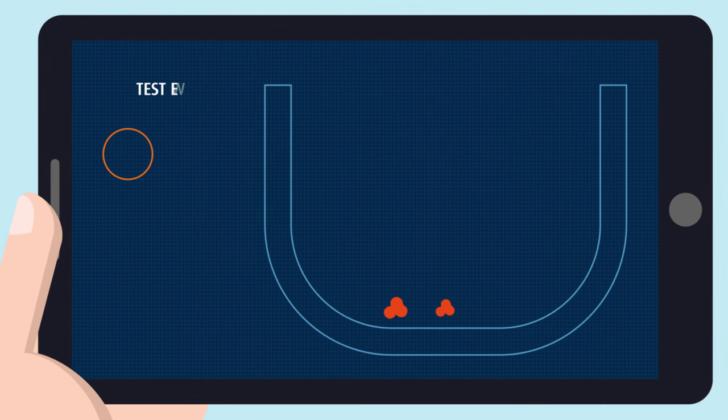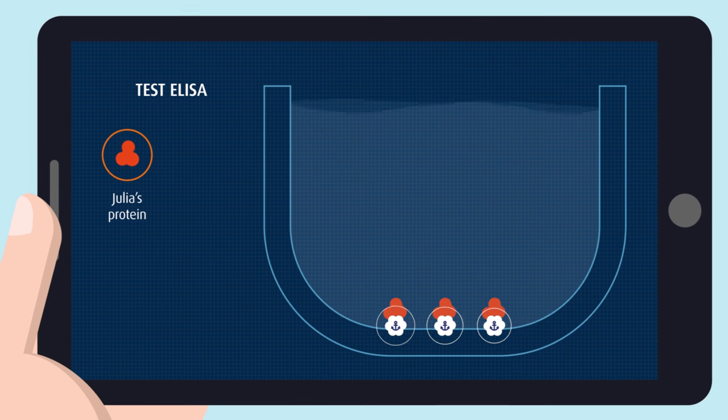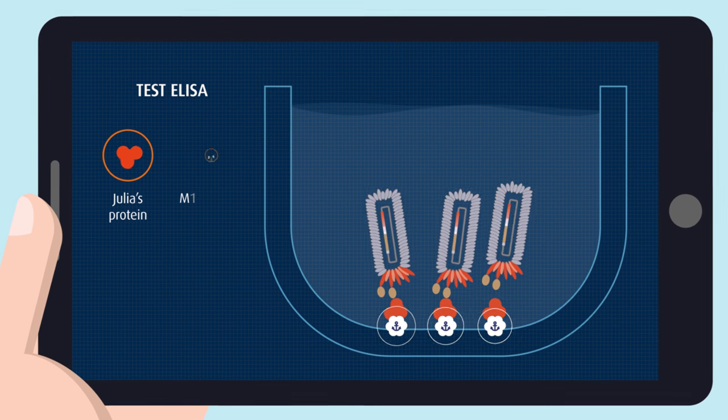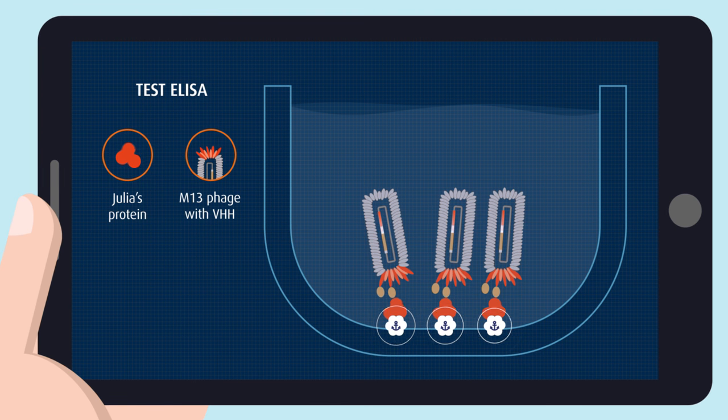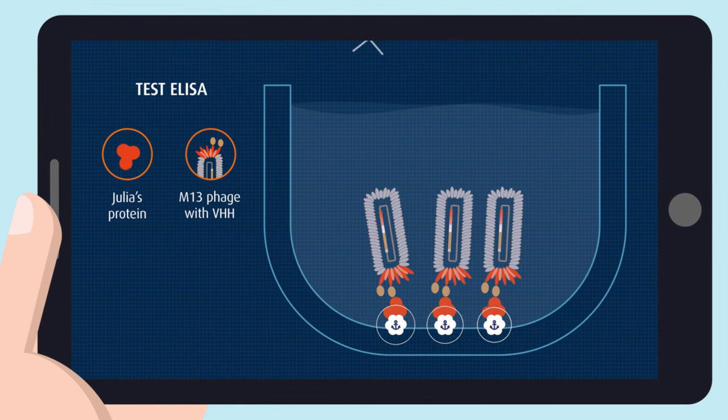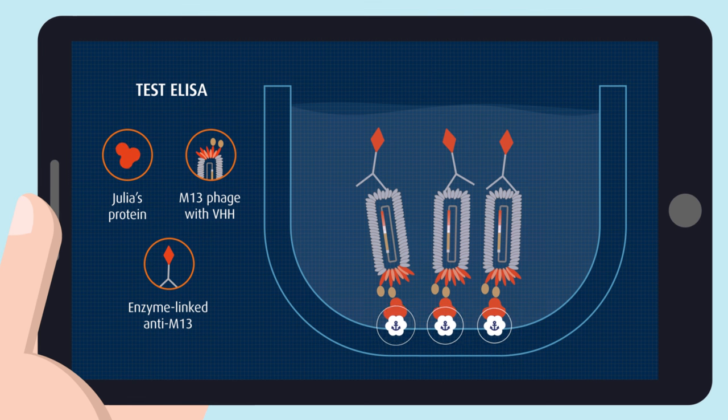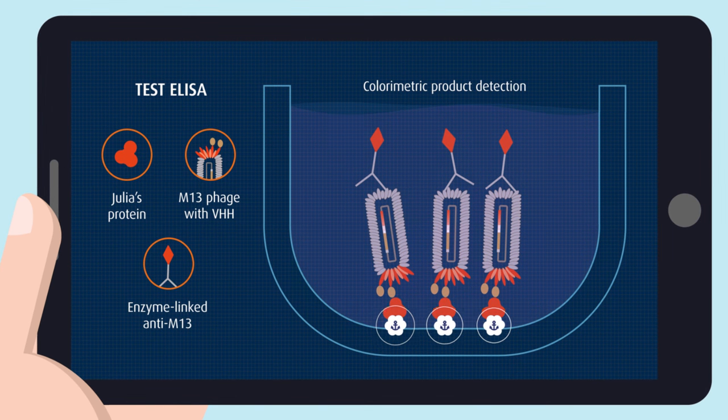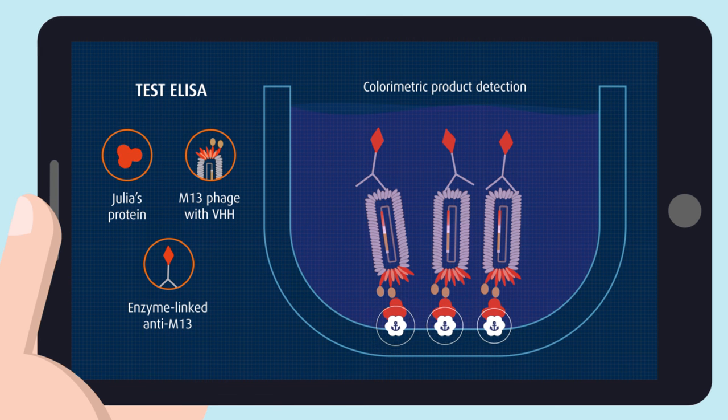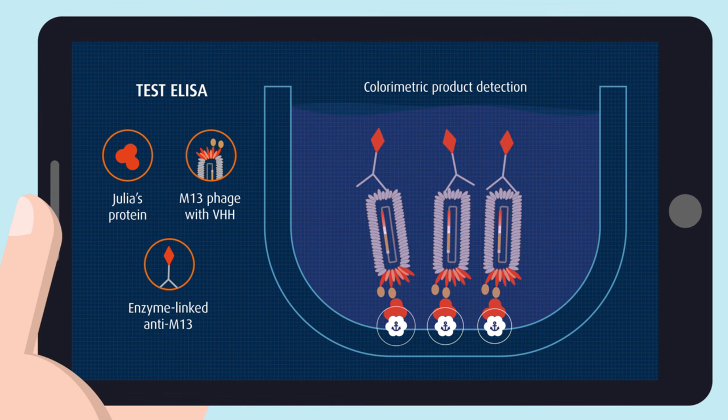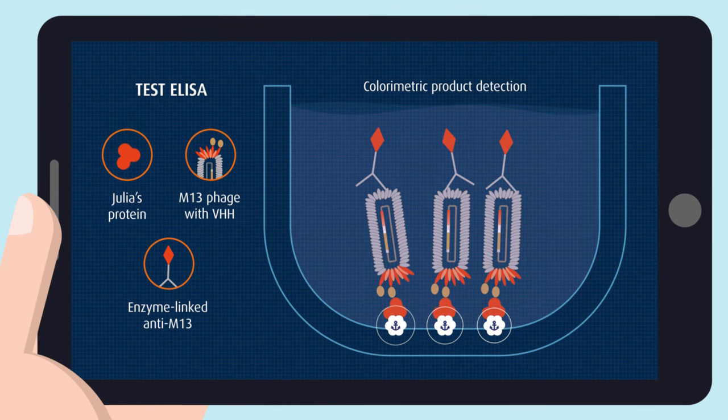Afterwards, we validate the selected VHH by phage ELISA. Pre-selected phages are incubated with the antigen which is not directly absorbed on the plate. A labeled anti-M13 antibody recognizing the bound phages is added and allows the detection of the antigen by an enzymatic assay. All the VHH we deliver are validated thanks to this process.